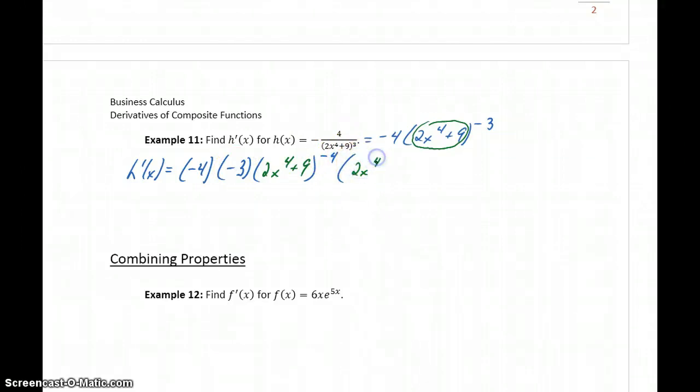Times the derivative of our interior function. This will give us negative 4 times negative 3 is 12 times 2x to the 4th plus 9, to the negative 4th, and then the derivative of that interior function will be 8x cubed or 96x cubed over 2x to the 4th plus 9 to the 4th.